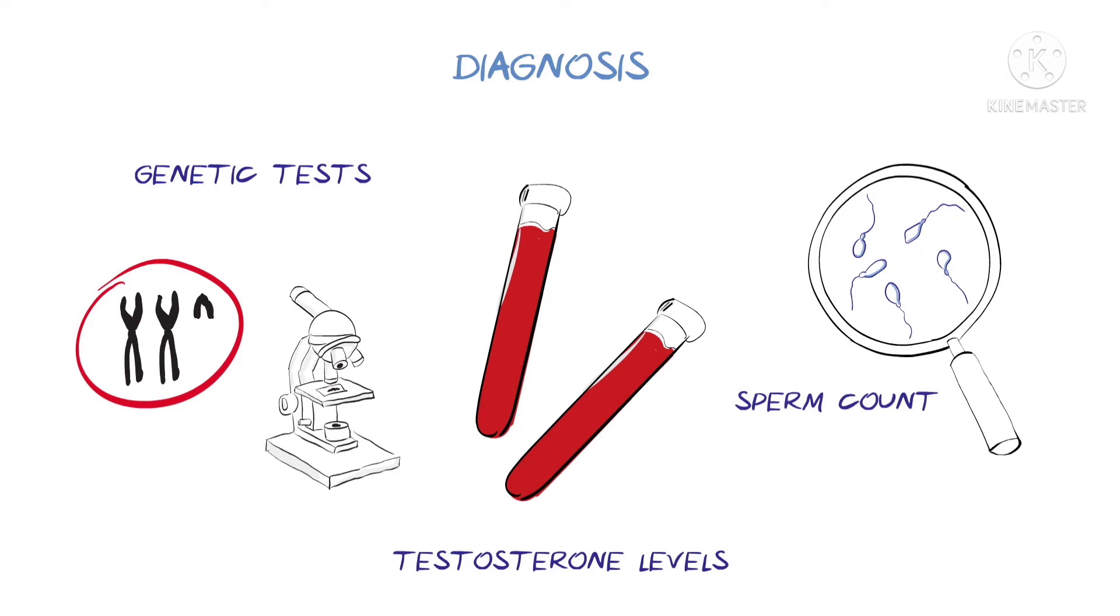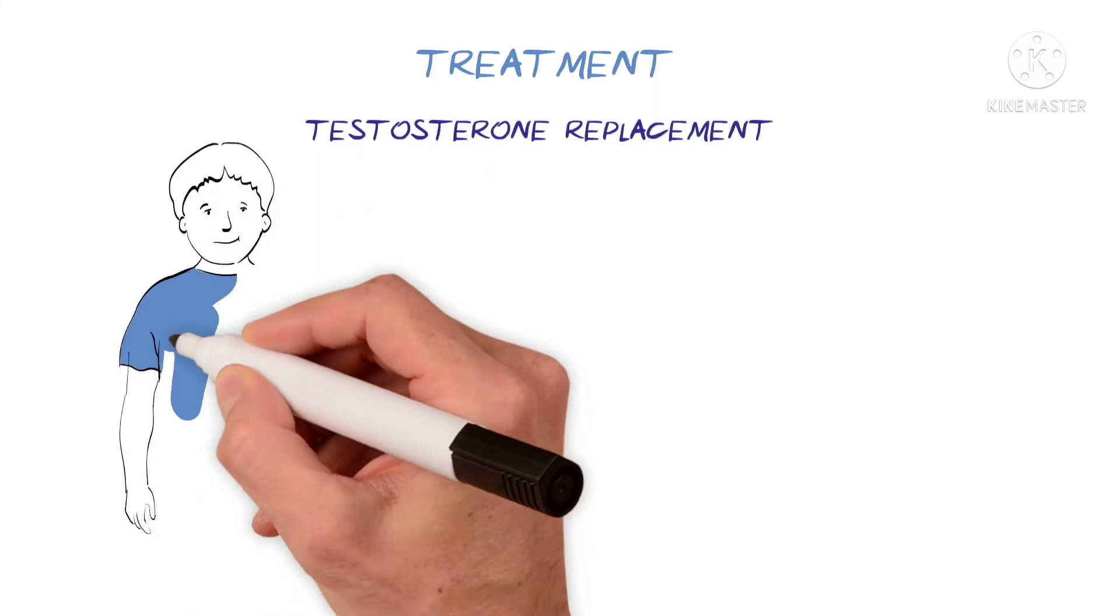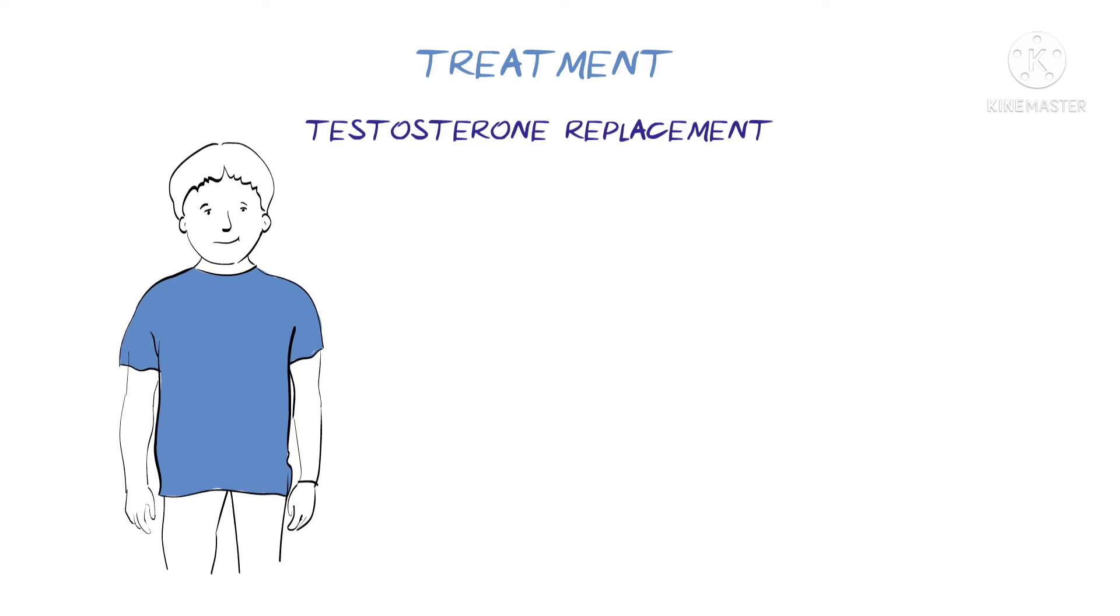While there is no cure for Klinefelter syndrome, testosterone replacement therapy is effective for treating some of the symptoms. This is usually not required until after puberty, and it can be provided in various ways, such as gels, tablets or injections.